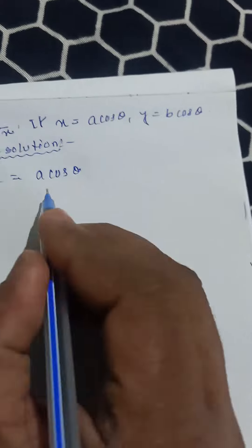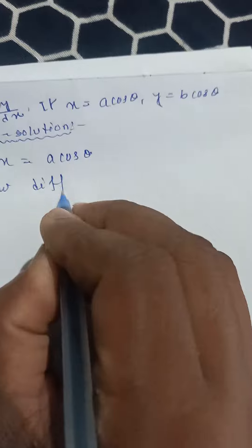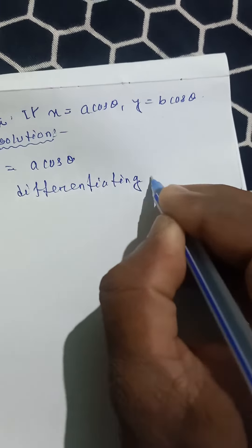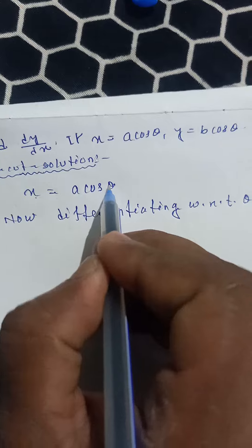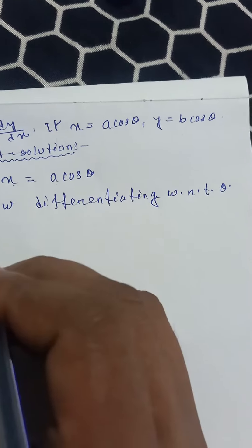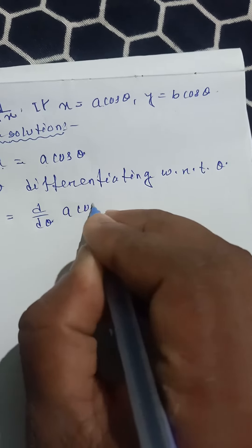Find dy by dx if x equals a cos theta, y equals b cos theta. So x equals a cos theta. Differentiating with respect to theta — because x is a function of theta and a is a constant — dx by d theta equals d by d theta of a cos theta.